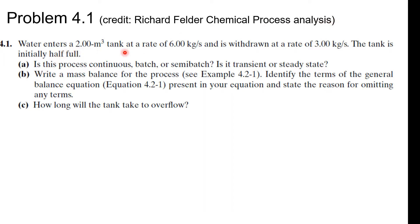So we're just going to continue problem 4.1, we're on chapter 4, doing some actual mass balance from Richard Felder's Chemical Process Analysis, 4th edition. Water enters a 2 meter cube tank at a rate of 6 kilograms per second and withdrawn at a rate of 3 kilograms per second. The tank is initially half full. Is this process continuous, batch, or semi-batch — transient or steady state? Write a mass balance for the process, identify the terms of the general balance equation present in your equation, state the reason for omitting any terms, and how long will the tank take to overflow?